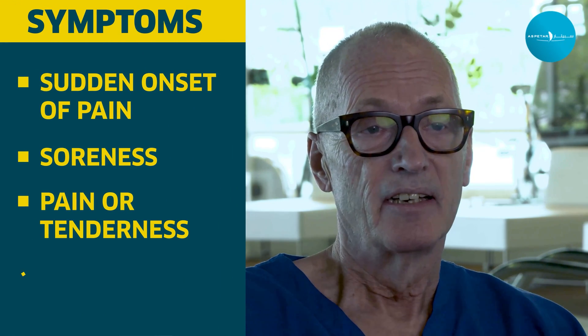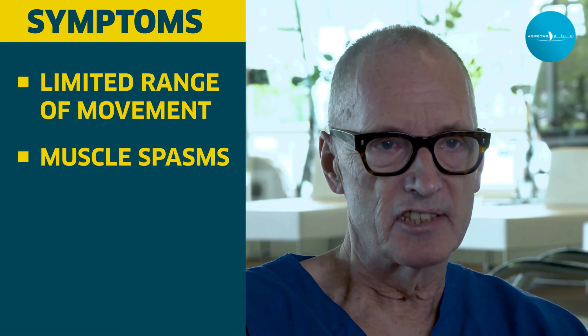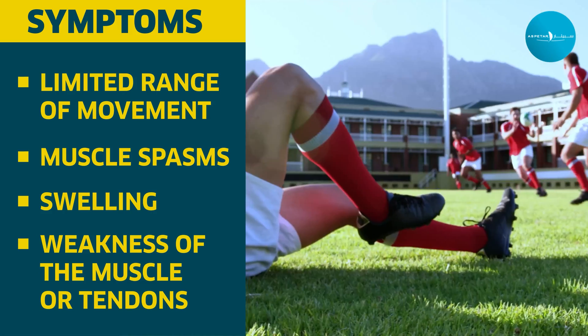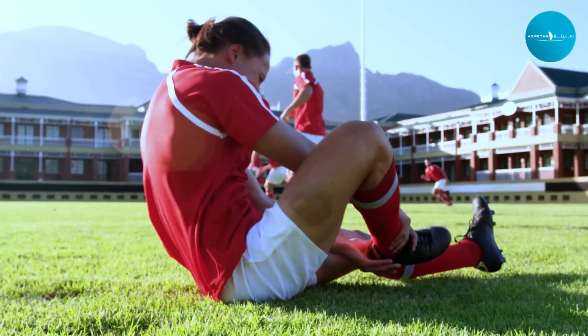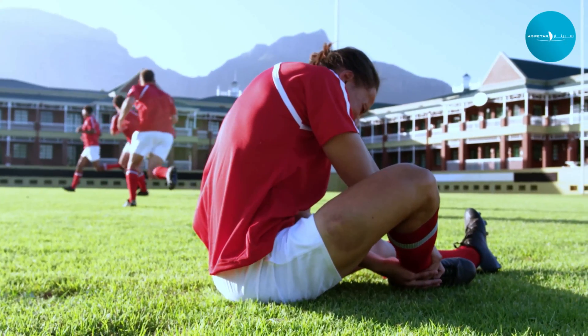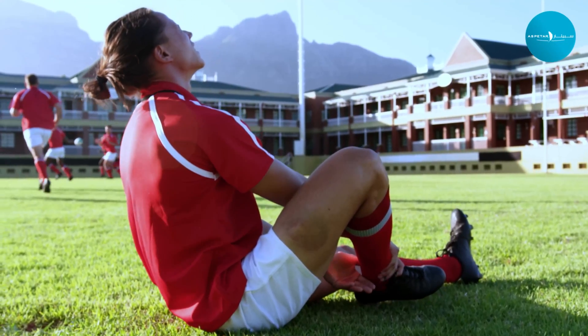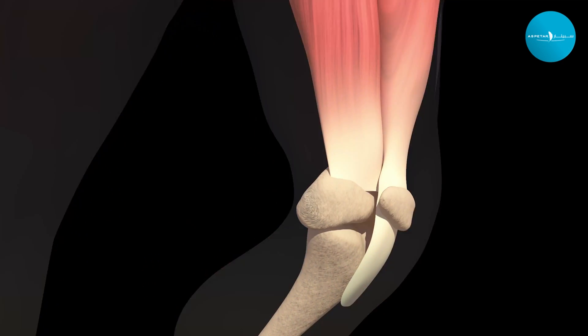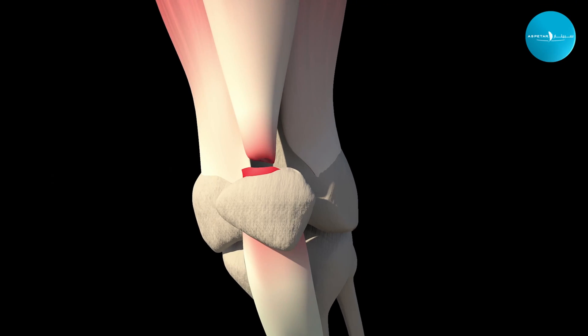The symptoms of a muscle strain are pretty straightforward. A typical classical textbook history is where a player is running and feels something go in their leg or arm, and can't carry on. The most important thing is to take that history — ask them what happened, what went on when they started feeling pain. Pain is the most important symptom. Bleeding and bruising are also commonly seen. If there's a muscle rupture — the muscle has come apart in the middle — you often see or feel a gap, or see a bulge at one end.